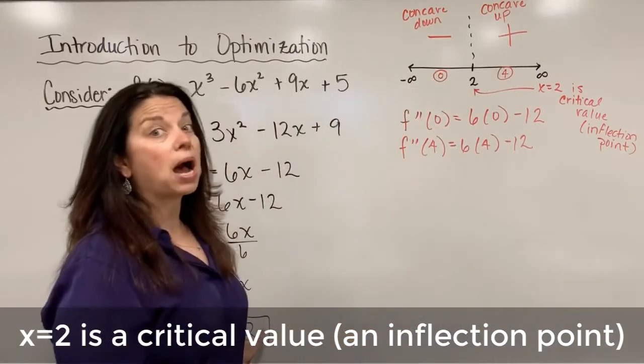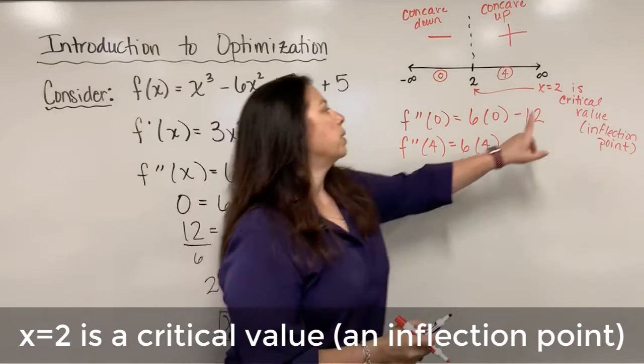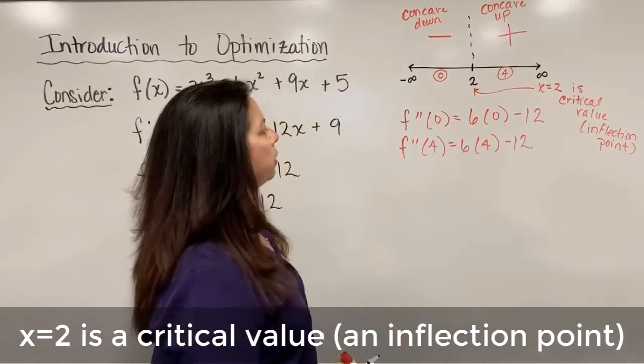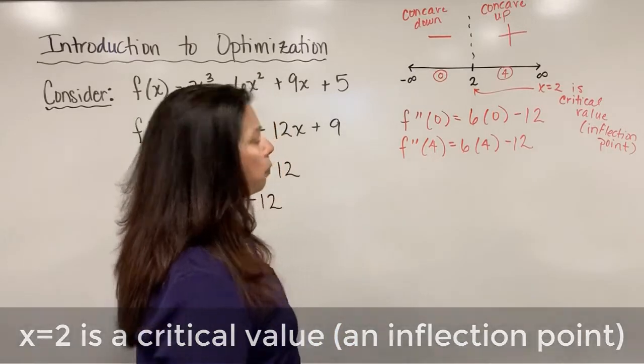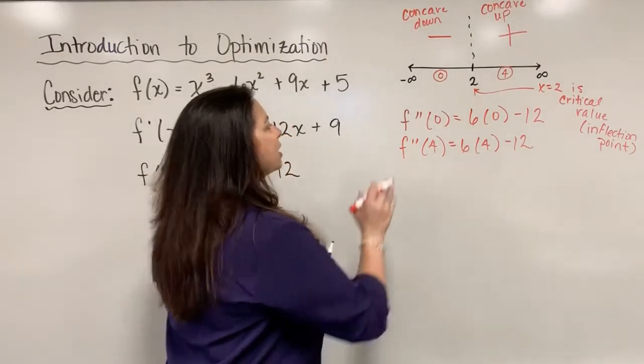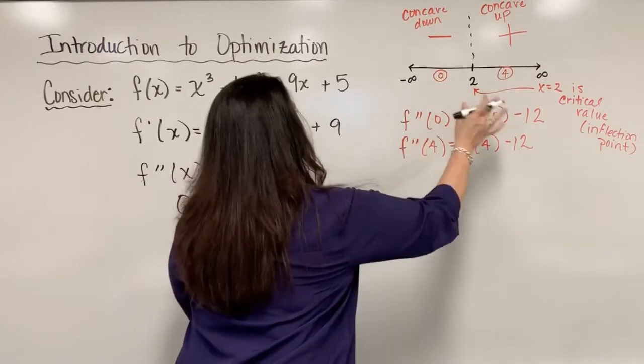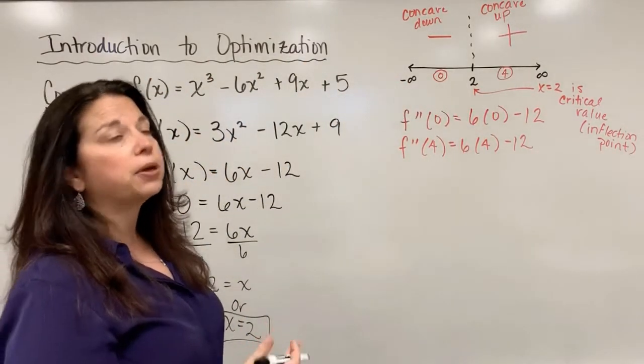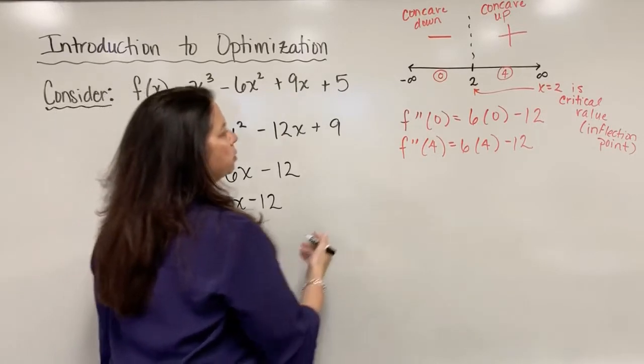Over here I said it was a possible critical value, but here x equals 2 confirmed that it is an actual critical value, the inflection point. We'd really like to know what the whole point is though. x equals 2. We can take that all the way back to the original function to figure out what the output is for that x equals 2 in that function.